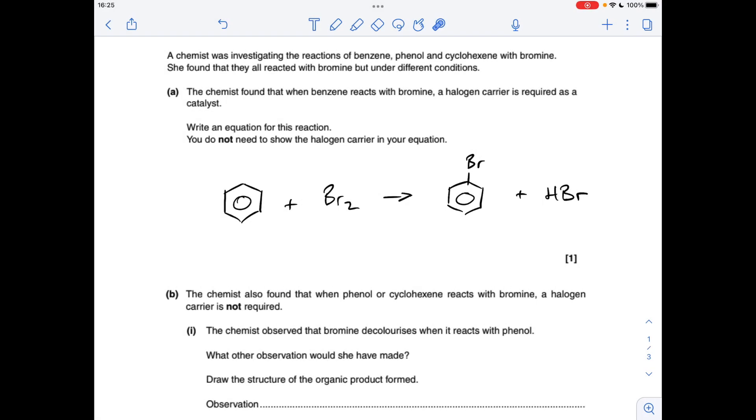So part A, the reaction between benzene and bromine. We don't need to worry about the role of the halogen carrier in the equation, so it's a straightforward substitution. One of the hydrogens, I've just taken that one there, it's going to substitute for one of these bromines, and you're going to get HBr, obviously, as a by-product.